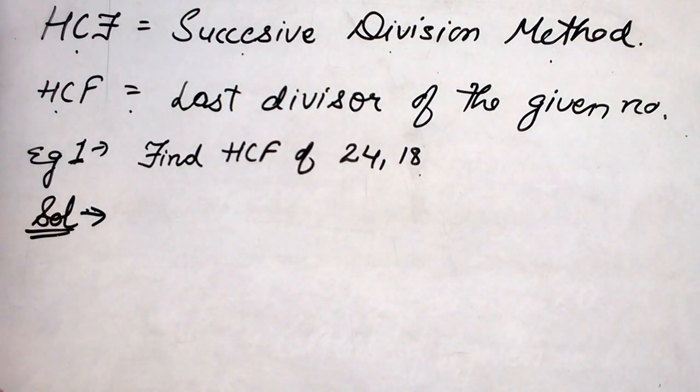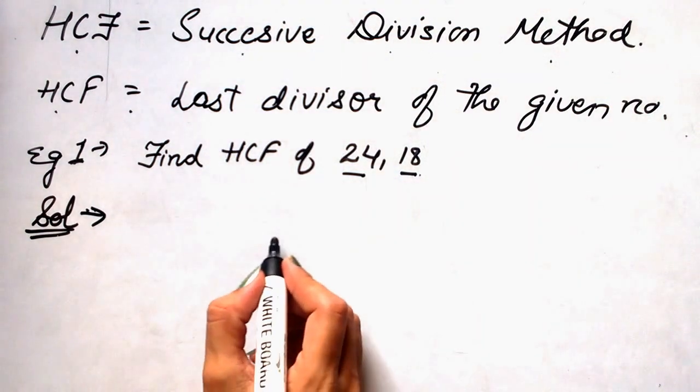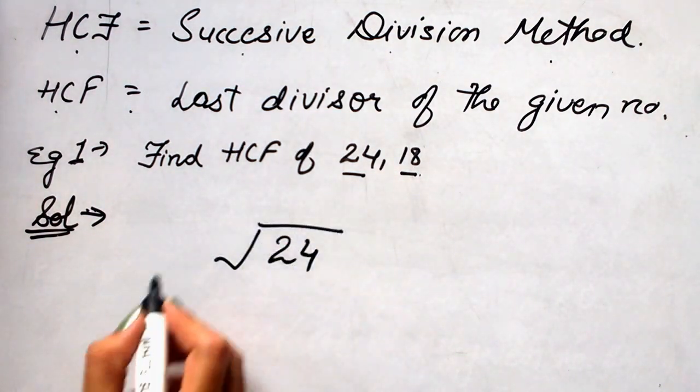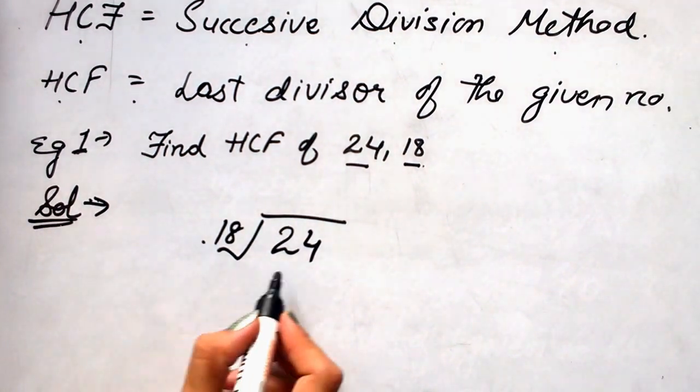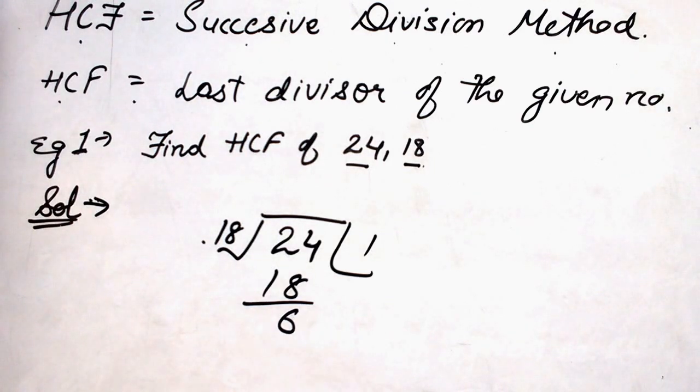For the solution, we may proceed as divide the larger number with the smaller number. So, larger number is 24 and divide by 18 which is smaller number. When we divide 24 by 18, we get 6 as remainder.